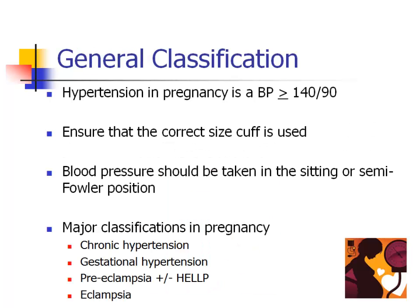Hypertension in pregnancy is defined as a blood pressure greater than or equal to 140 systolic over 90 diastolic. The position of the patient and size of the cuff influence blood pressure readings, so it's important to use the correct technique. Several categories for hypertension in pregnancy exist and vary based on the timing of diagnosis and associated signs and symptoms.